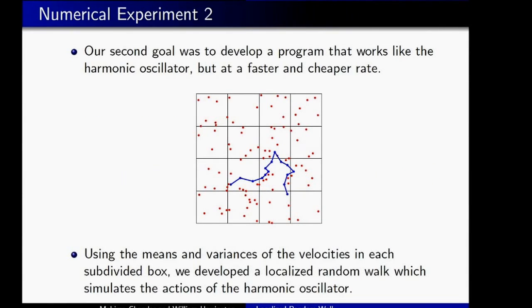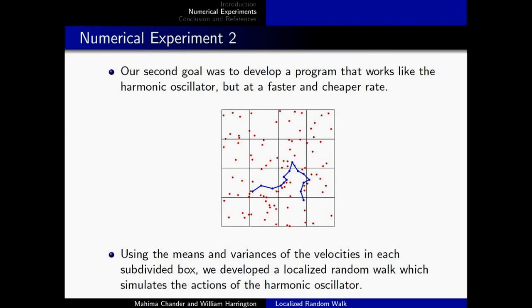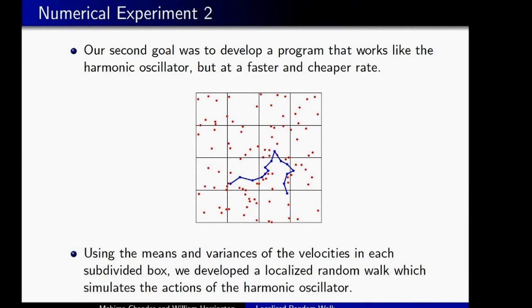So in the second numerical experiment, our goal is to develop a program that basically mimics the actions of the harmonic oscillator, which we were working with previously, but at a much faster and cheaper rate. So essentially what it does is it starts the particles in the exact positions that the harmonic oscillator would, and we ran a trial of the harmonic oscillator to calculate at each time step the mean and variances in each box of the grid. And at each time step, it would move the particles in our faster simulation using the mean value of the original particles in that box. So let's say the mean velocity was this direction, so it would move it there, and at the next time step the mean velocity was this way, and so on and so forth.